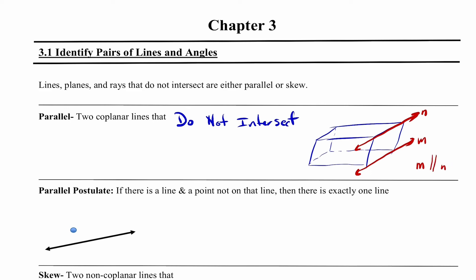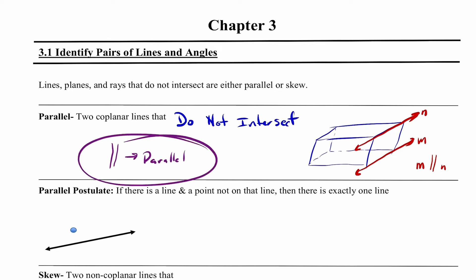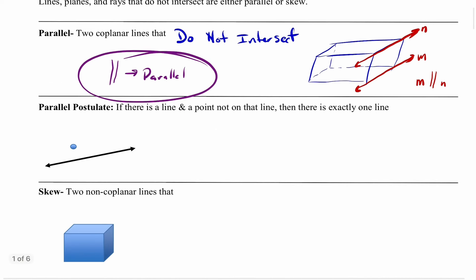So this is a notation thing. When we have these two vertical lines, that means parallel. That's a vocab piece you're going to really have to make sure you have, because you'll see that all over the place embedded in problems.